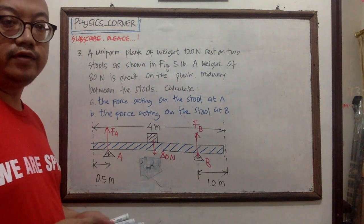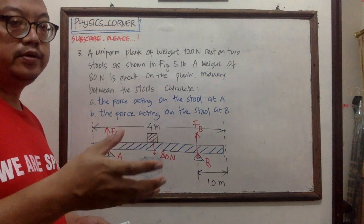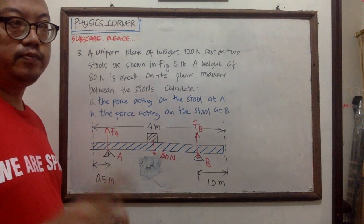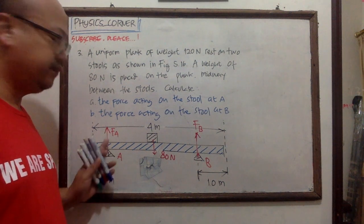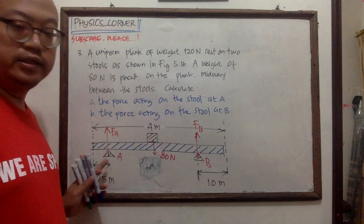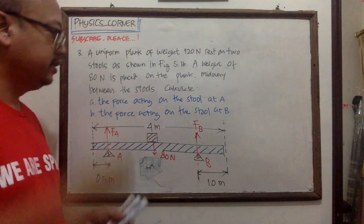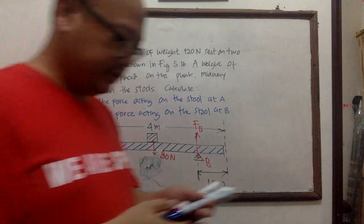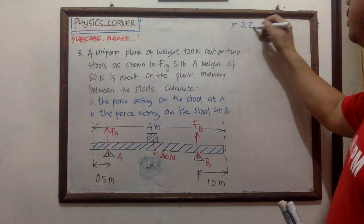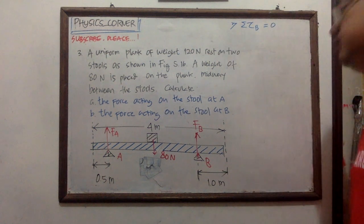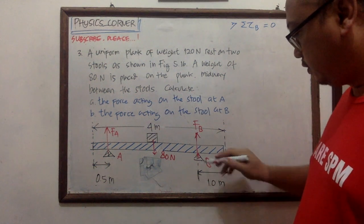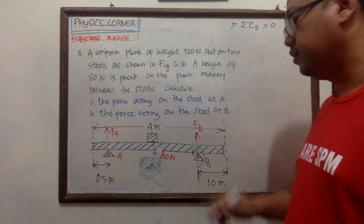To find force A, we need to use the torque method. The total torque at point B equals zero to find force A, and the total torque at point A equals zero to find force B. So all forces are rotated about the pivot point.